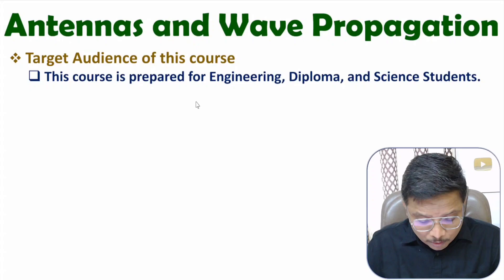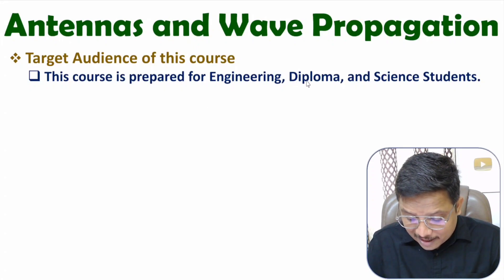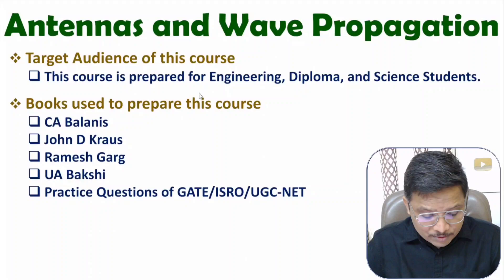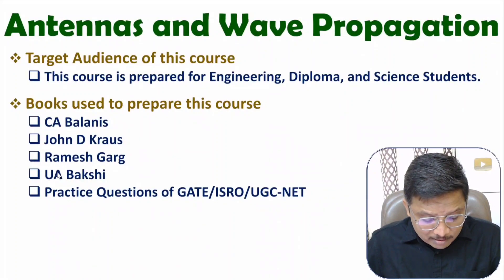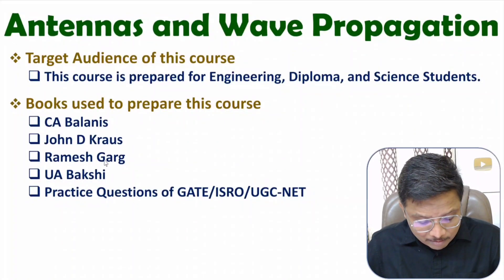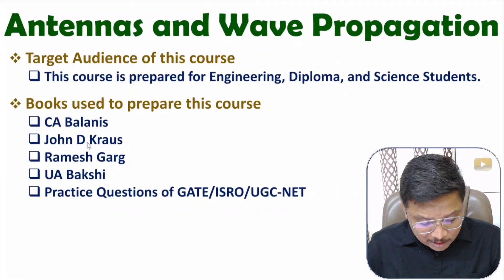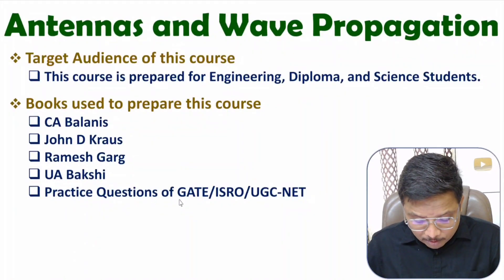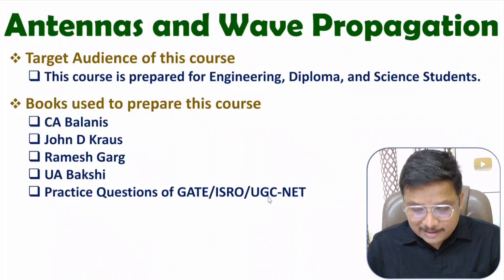This course is prepared for Engineering, Diploma and Science students. To prepare this course, I have used in total four different books. The major book for this course is written by C.A. Balanis. I have used the Ramesh Garg book to prepare content on microstrip antenna, as well as the John D. Cross book and U.A. Buxy book. I have also used many practice questions from GATE, ISRO and UGCnet examinations.